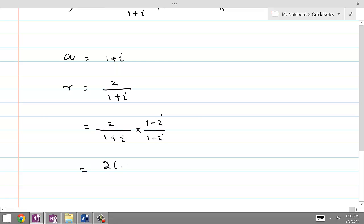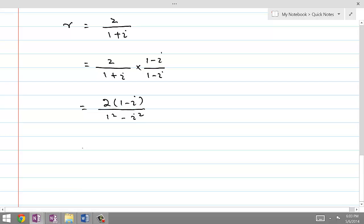So this is 2 times 1 minus iota over 1 squared minus iota squared. And since iota squared is equal to minus 1, so 2 times 1 minus iota over 1 minus minus 1. Remember that iota is a complex number and iota squared is equal to minus 1.